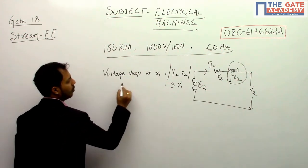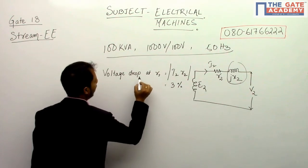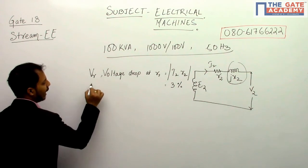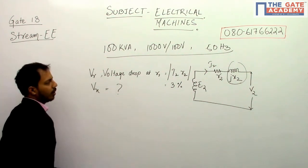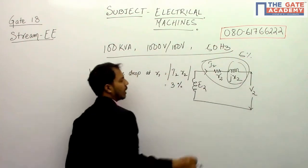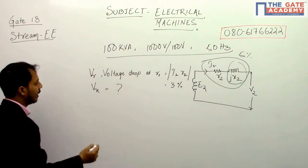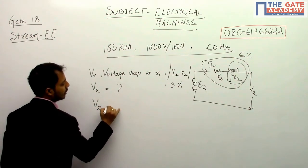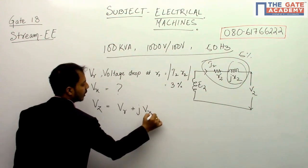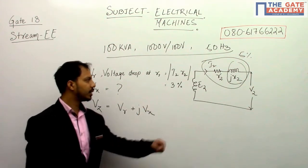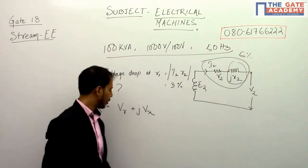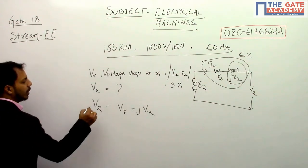Let me consider this as VR2 or VR. Similarly VX is the voltage drop at X2. The complete voltage drop is given as 5%. Let me consider that as VZ. That means VZ is nothing but VR + jVX, because it is a series impedance. So I can write this equation.